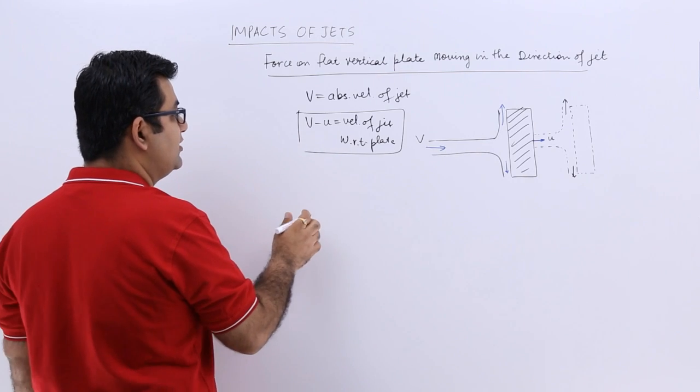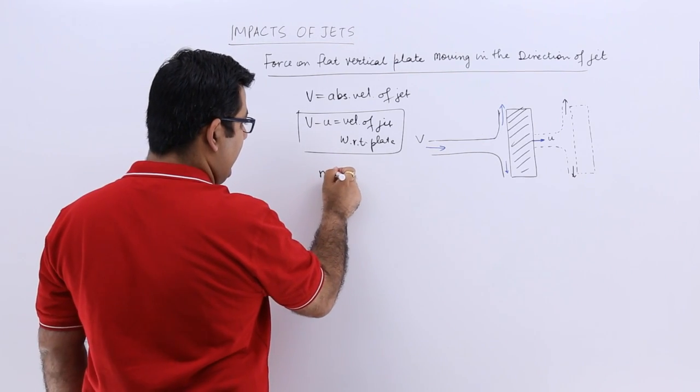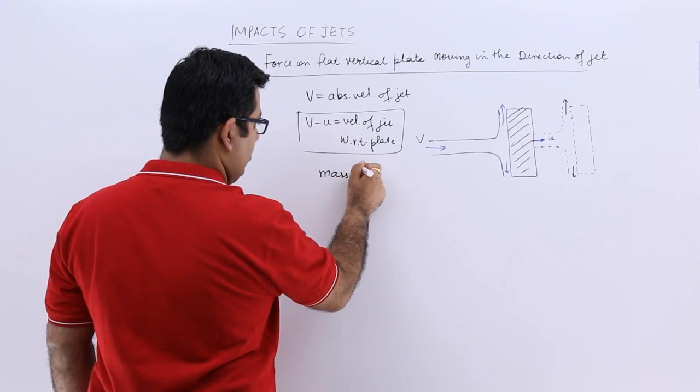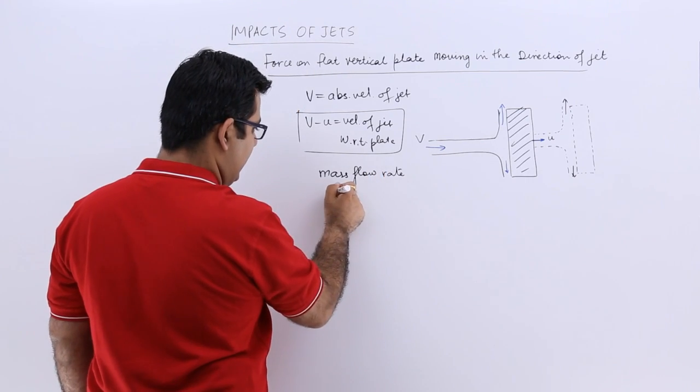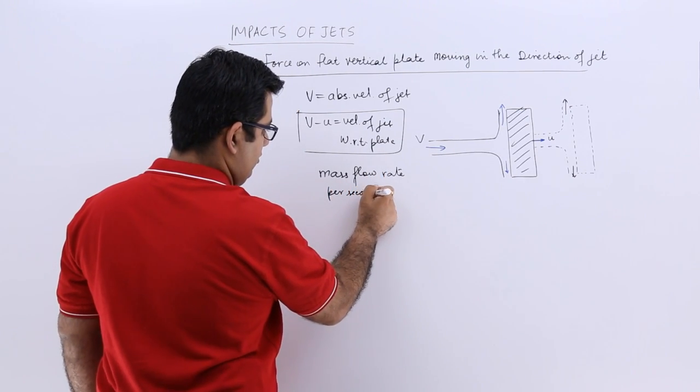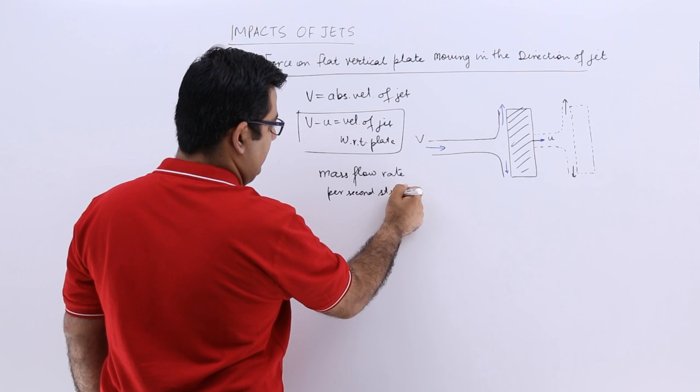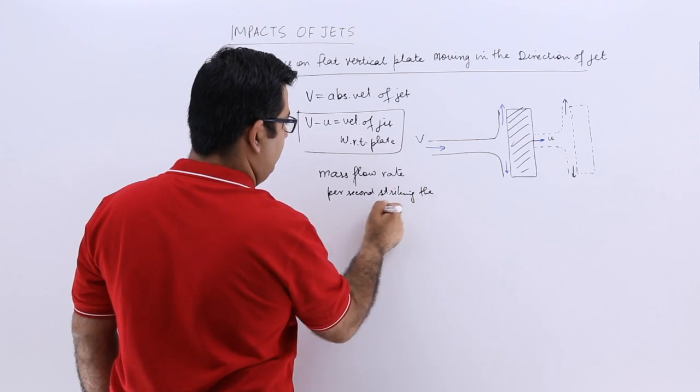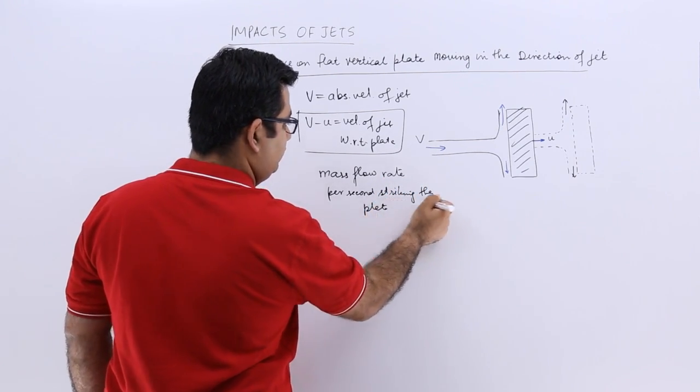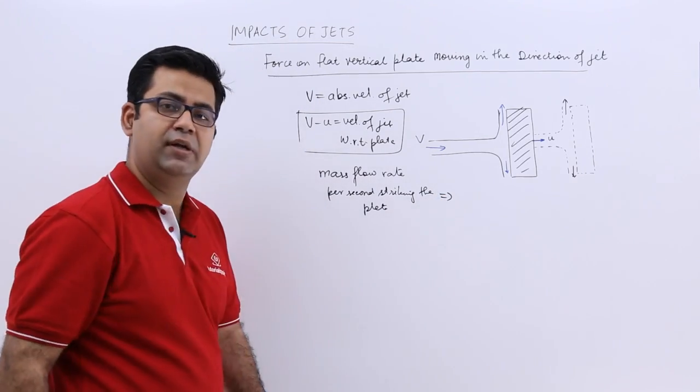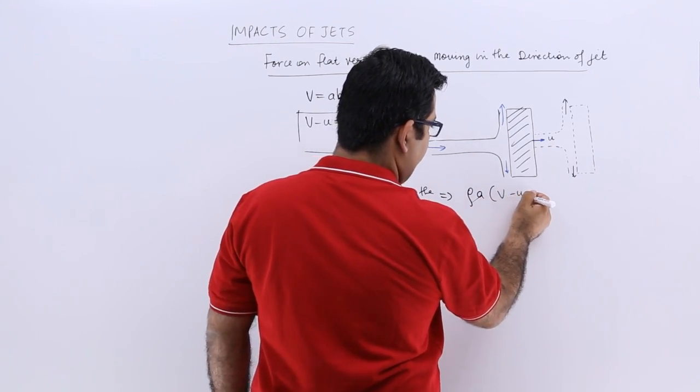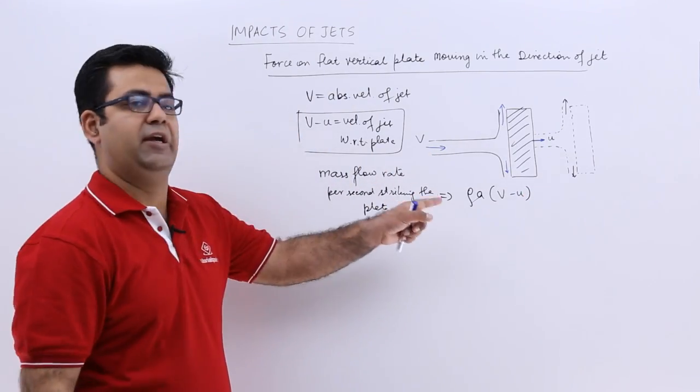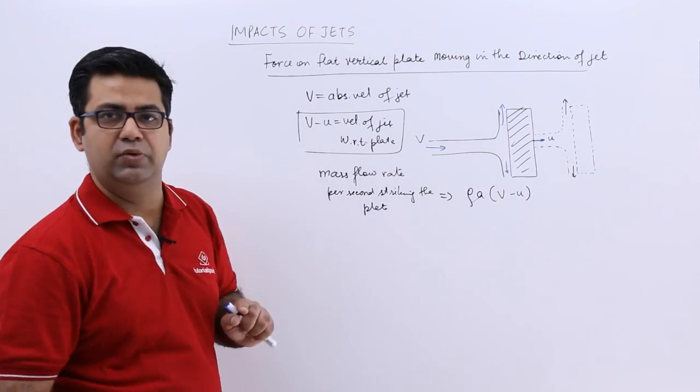So from here we can say that the mass flow rate per second striking the plate is equal to density into area into the velocity with which it strikes the plate, which is v minus u in this case.